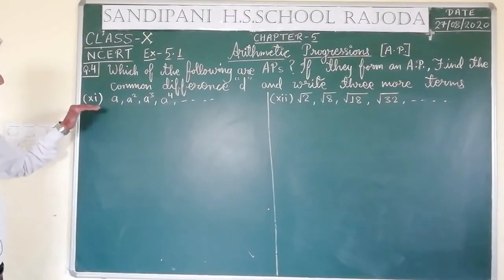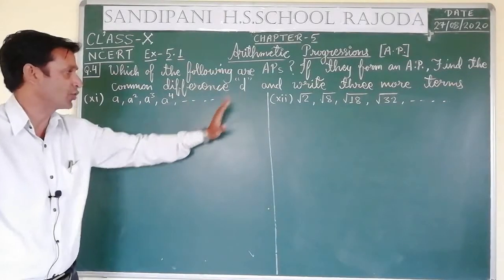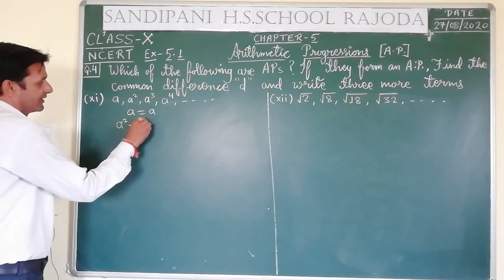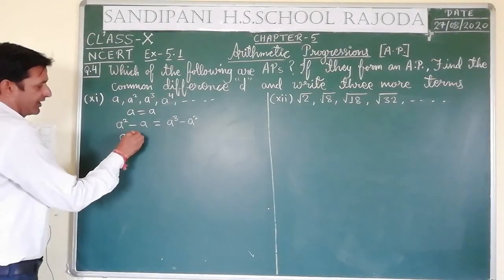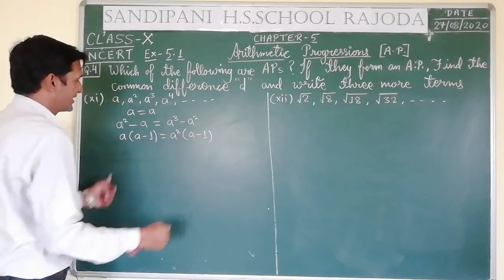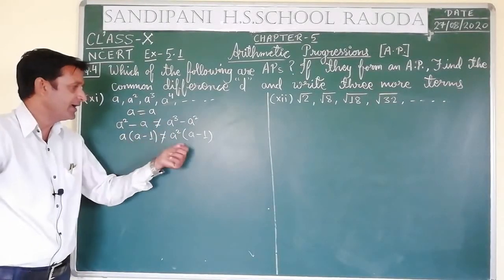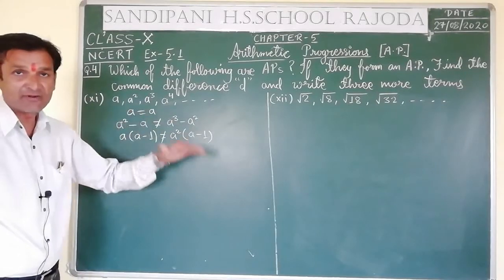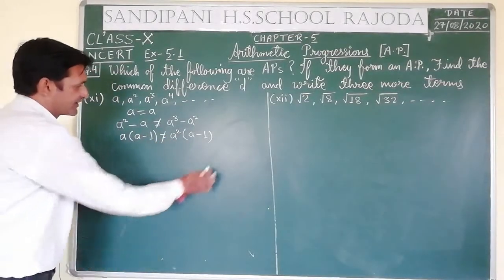Now see question 11: A, A², A³, A⁴, and so on. First term is A. We check: A² − A = A(A−1) and A³ − A² = A²(A−1). These are not equal because here it is A and there it is A². So the two differences are not equal.